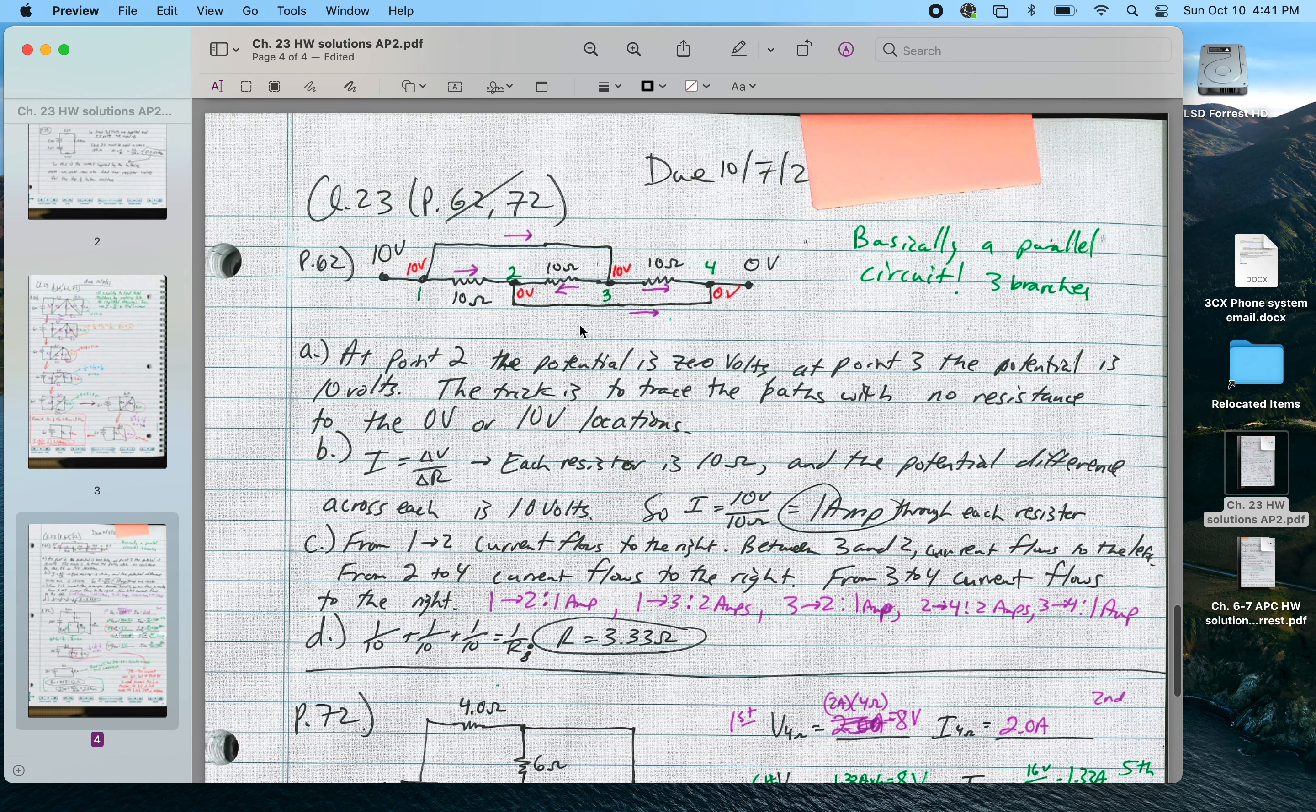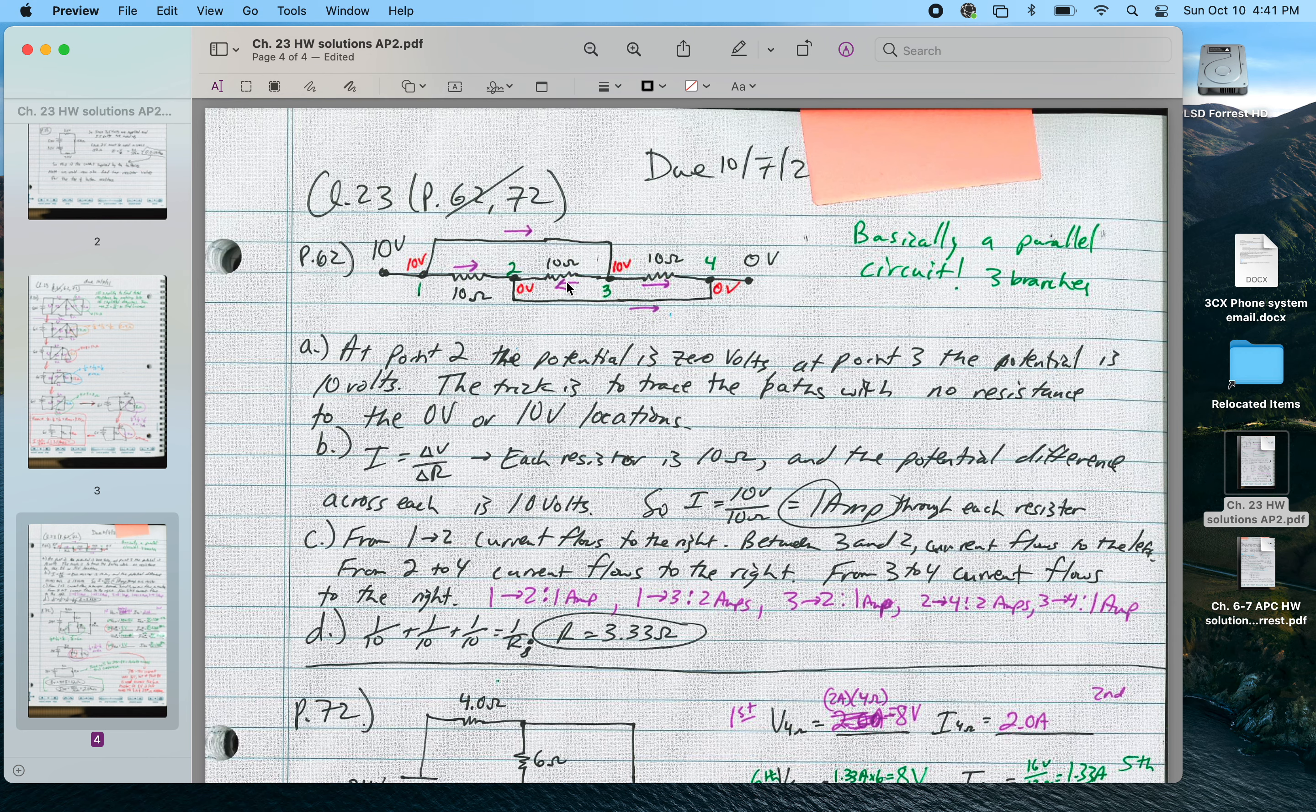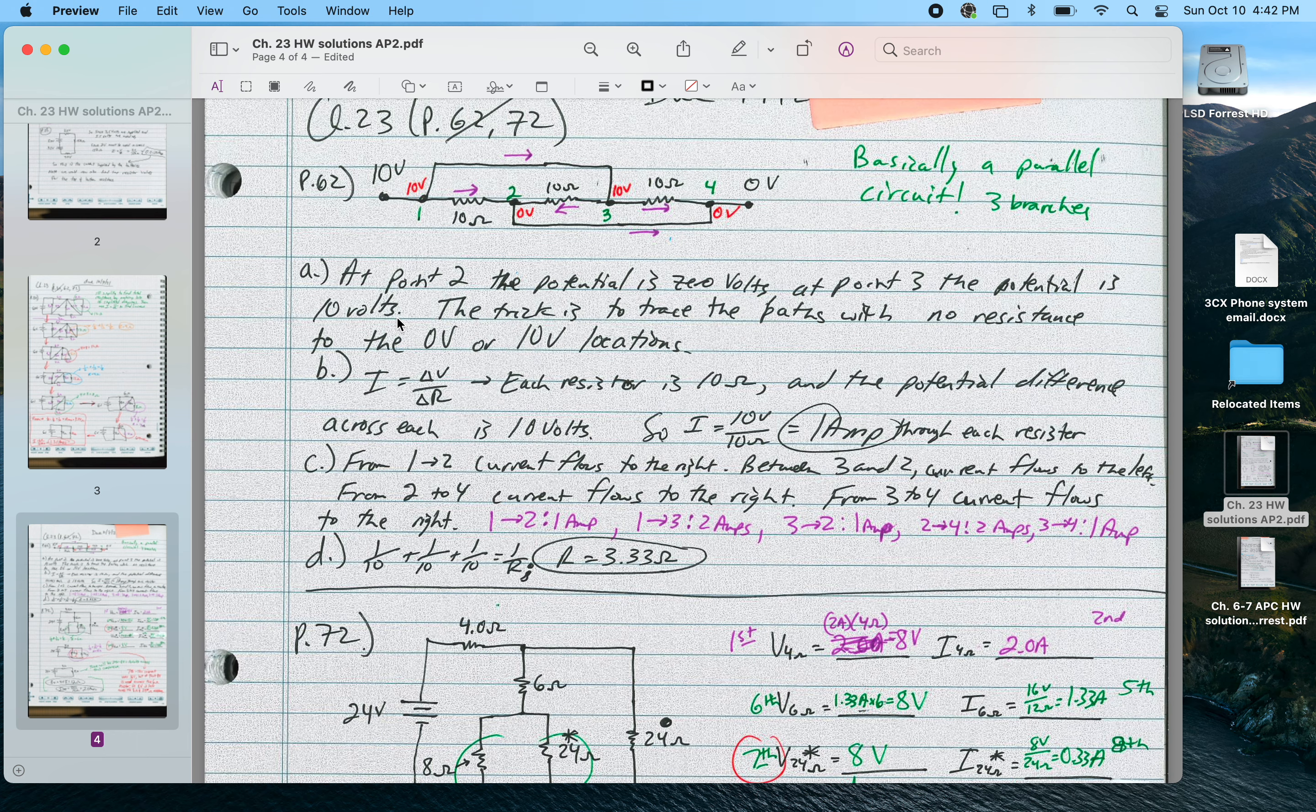This one we talked extensively about in class. This is sneaky, sneaky, sneaky. Basically bottom branch of a parallel circuit. Middle branch of a parallel circuit. Top branch of a parallel circuit. So there are three separate paths for that electricity to go. The current through each 10 ohm resistor is 1 amp. I've drawn the directions of the current. It's based on the fact that this must be at 10 volts. Point 3 is 10 volts. Point 2 is 0 volts. And 4 is 0 volts. That's because these points 2 and 4 are touching this region of 0 volts with no resistance in the wire. These points 1 and 3 are touching the part of the circuit at 10 volts with no resistance in the wire. Total resistance to the current, 3.33 ohms.